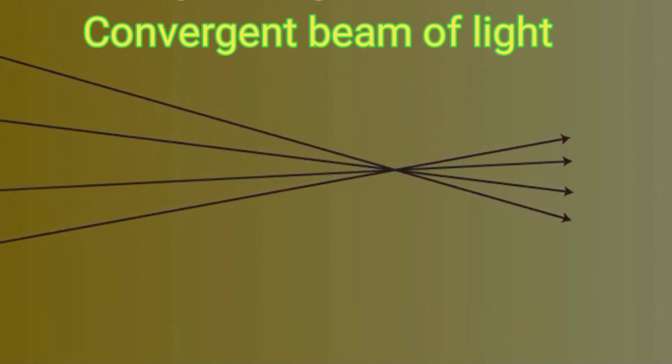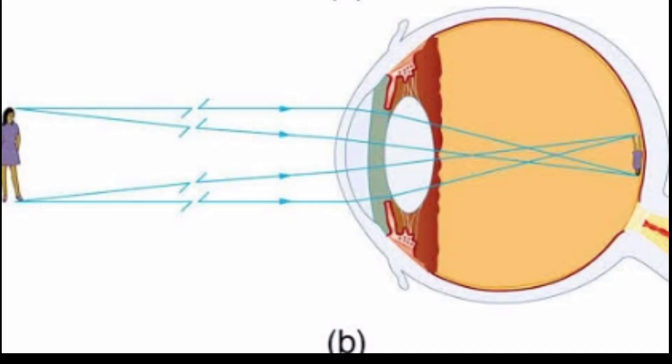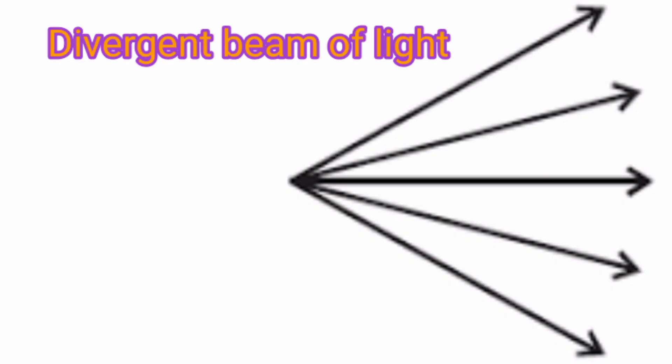Convergent beam of light: when rays of light coming from different directions meet at a point, such a collection of rays is called a convergent beam of light. The distance between the rays goes on decreasing until all the rays meet at a point. Example: the rays entering our eyes converge on the retina.